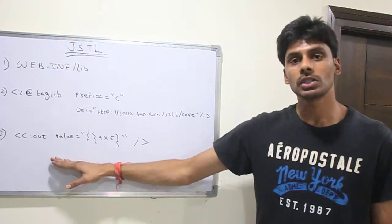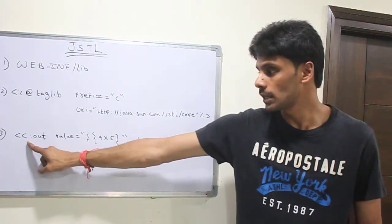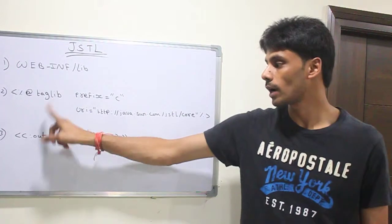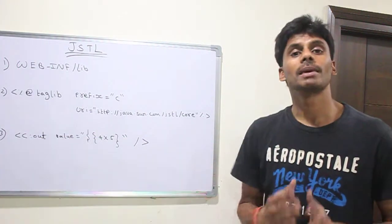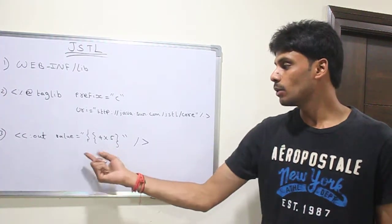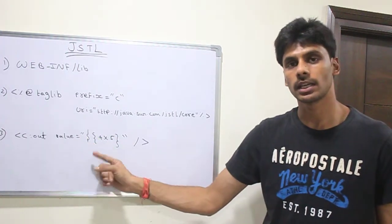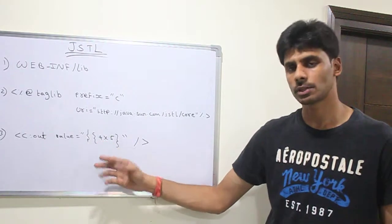Third step is to use the tags themselves. Here I am using C colon out, the core library's out, which will print the values from a Java bean or a value using the expression language syntax. Here I am using the JSP's dollar, which is expression language.